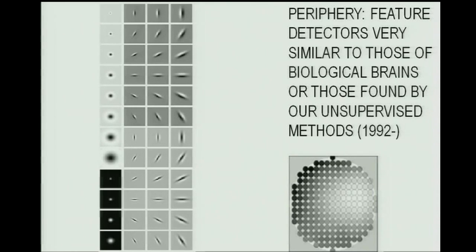Automatically, you get Gabor filters and on-center off-surround detectors and orientation-sensitive bar detectors in the lower layers. As you look at feature detectors in higher layers, they get more and more opaque and intransparent — less clear what's going on, just like in human brains.